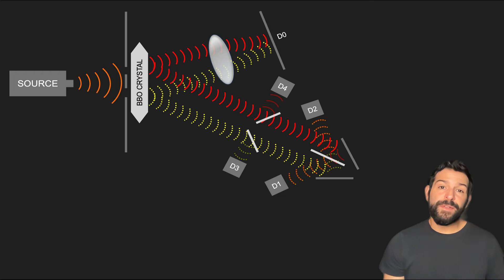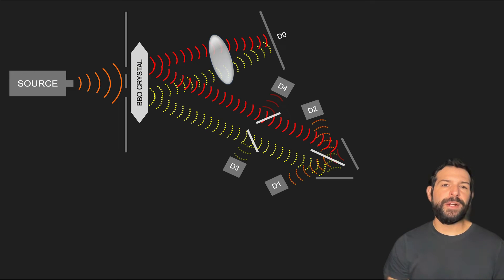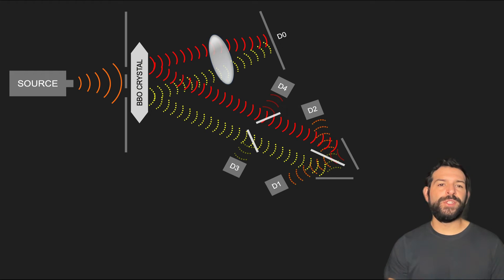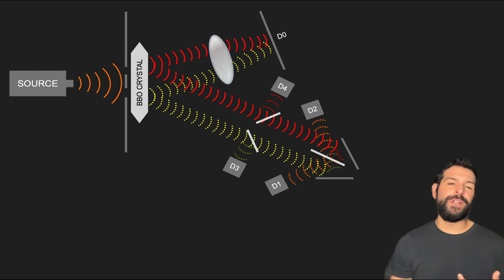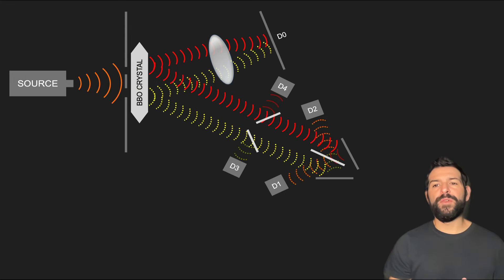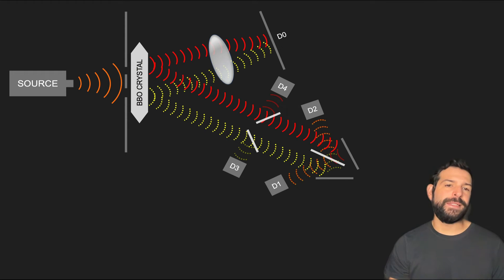Now, in the complete version of this experiment, there is also an additional pair of beam splitters that either direct the information photon to the which-path detectors D3 and D4, or allow the photon to pass through the eraser. But all these really do is allow for both of the scenarios we already explained to take place.